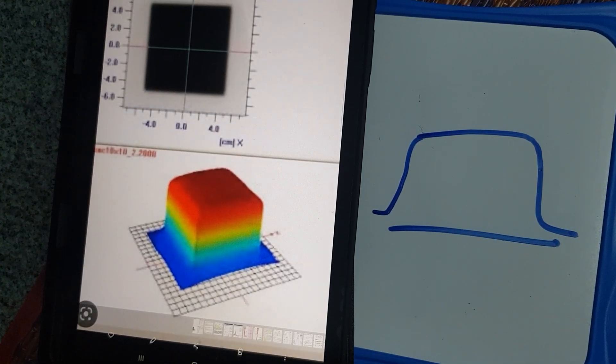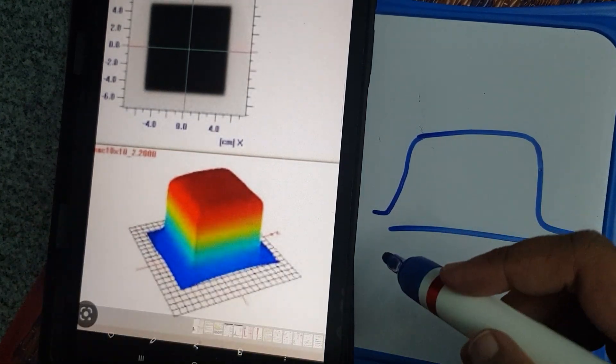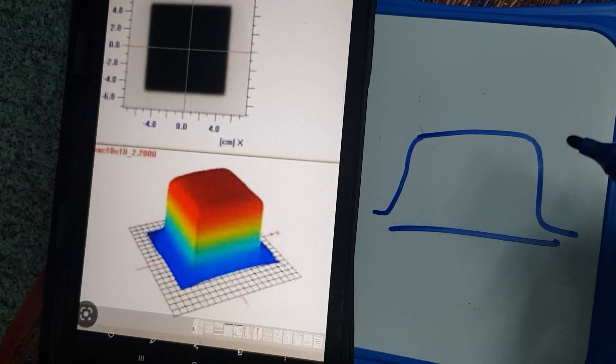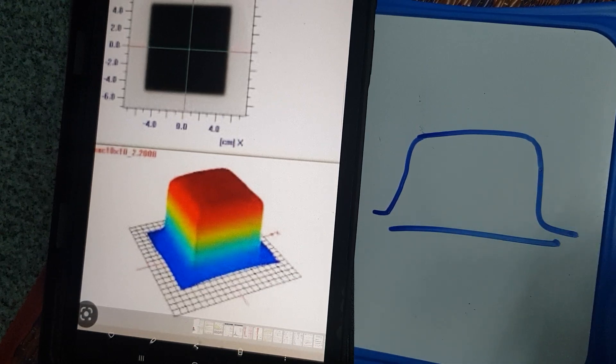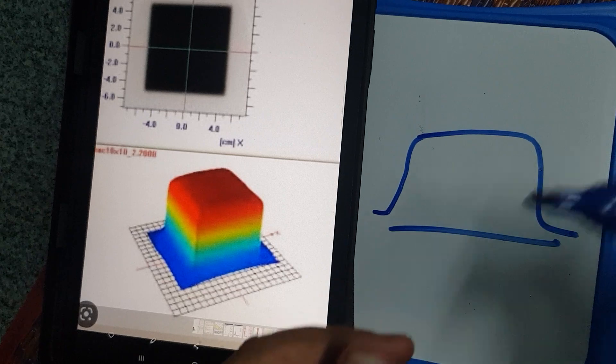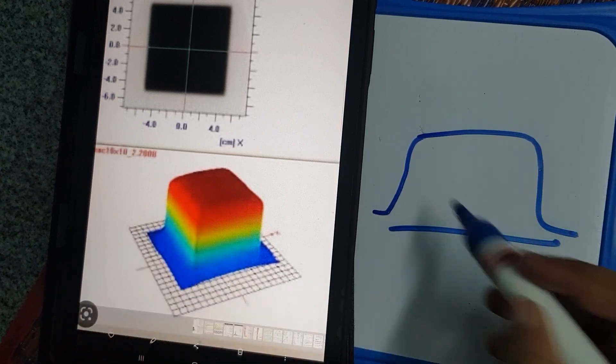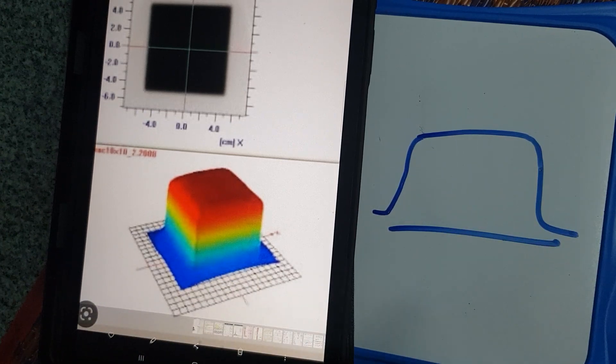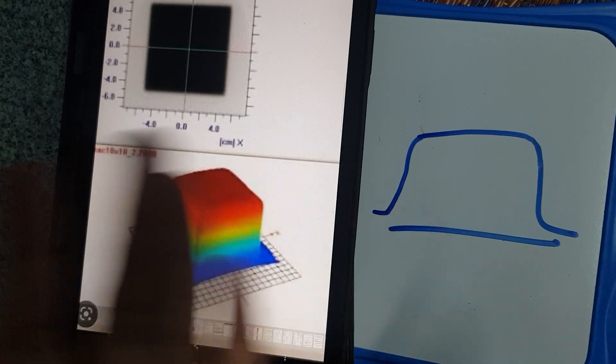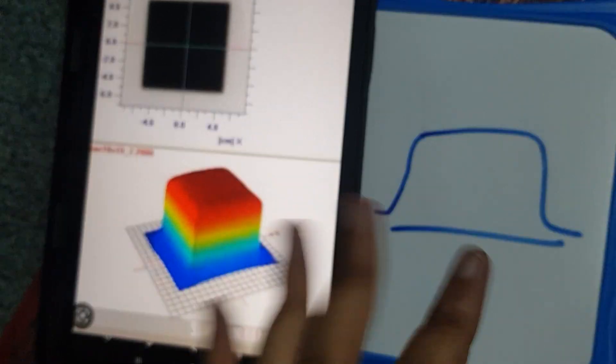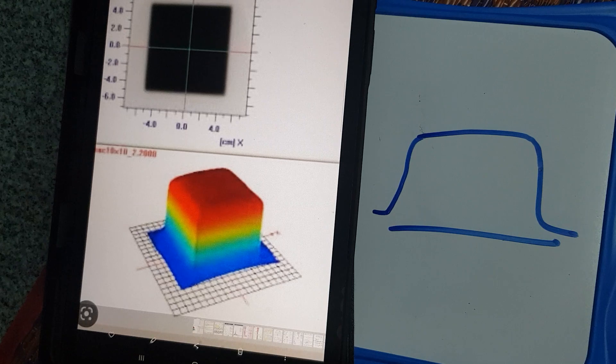In a beam profile, we know that we measure for flatness and symmetry. Flatness, we know that is the expression of difference between the maximum and the minimum dose across the beam profile at a particular depth.